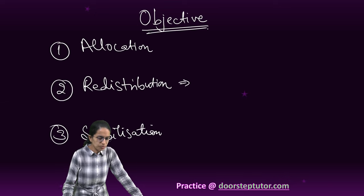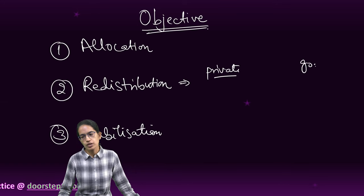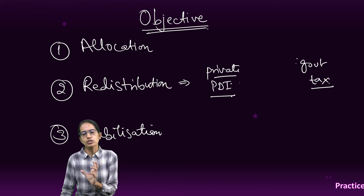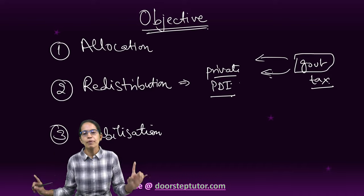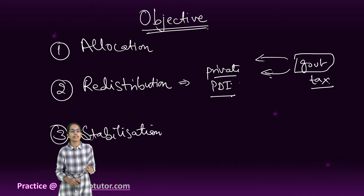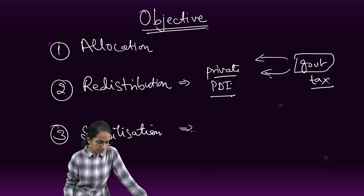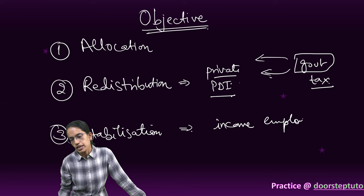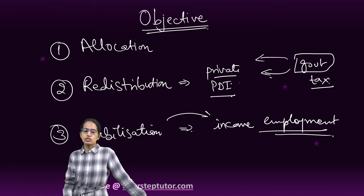Redistribution means there is national income — part of it would go into private hands, a segment would go to the government. Private entities pay taxes and the remaining personal disposable income is spent, while the money going to the government is redistributed to the poor, the needy, and for society's development. So the budget has an idea of redistribution — money should go rightly into the hands of all those who require it.